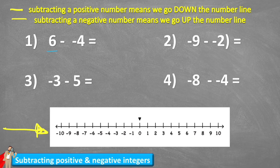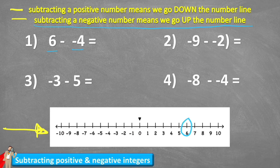Question one says six subtract a negative four. We're starting at six on the number line and we are subtracting a negative four. Now when we subtract a negative, as the second rule says, we have to go up the number line. Think of it like this: we had six and we also had a negative four — a debt of four — but then fortunately that debt was taken away by subtracting the negative four. So therefore I'm going to actually add four to my six.